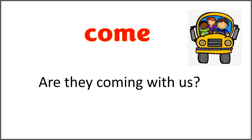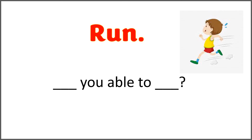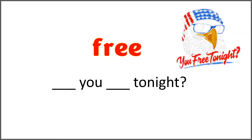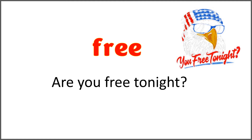The given word is 'run' and the question is 'blank you able to blank?' Use the word 'run' in the correct form with 'are' to ask this question. And the answer is: are you able to run? The given word is 'free' and the sentence is 'blank you blank tonight.' Use 'free' with 'are' to complete the sentence. And the answer is: are you free tonight?